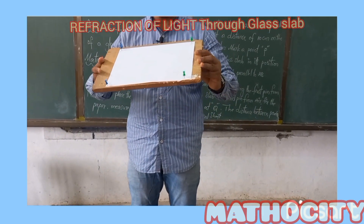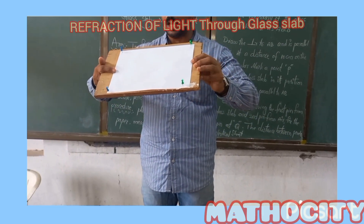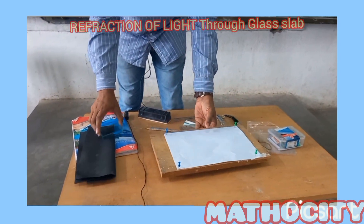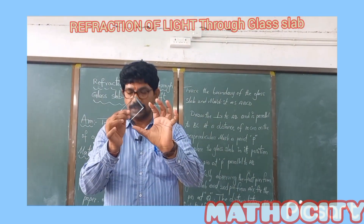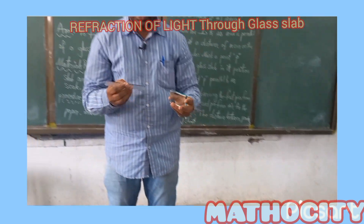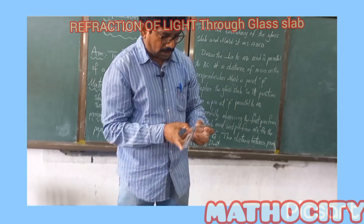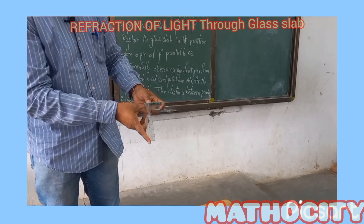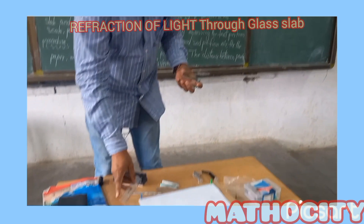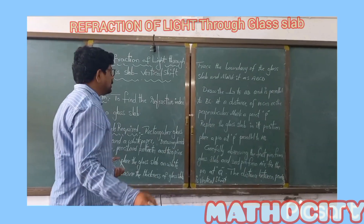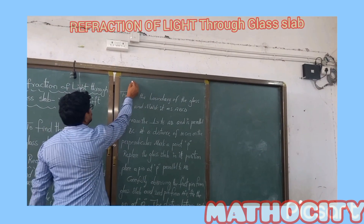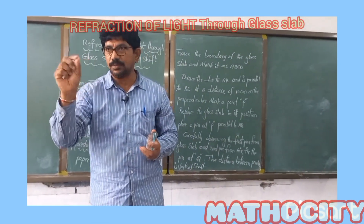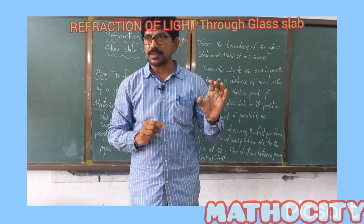I have taken a drawing board and fixed an A4 size white paper on it. Next, I have taken the glass slab. With the help of the scale, I am measuring the thickness of the glass slab — it is exactly one centimeter. Make a note: the thickness of the glass slab is one centimeter.